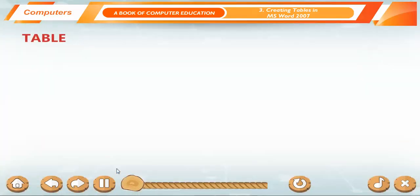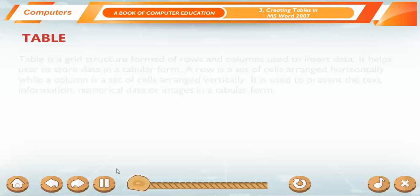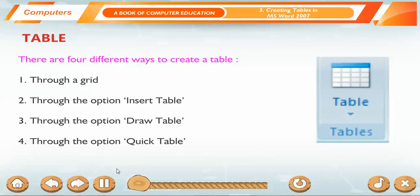Table. A table is a grid structure formed of rows and columns used to insert data. It helps users store data in a tabular form. A row is a set of cells arranged horizontally while a column is a set of cells arranged vertically. It is used to present text information, numerical data, or images in a tabular form. There are four different ways to create a table.